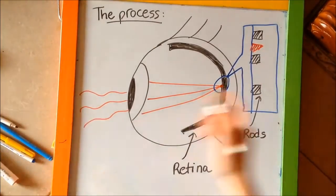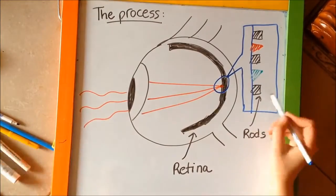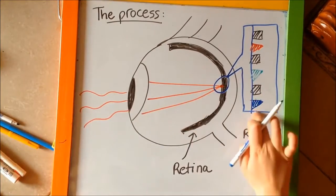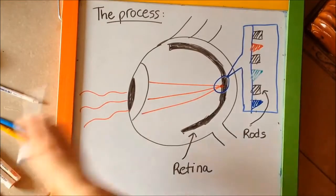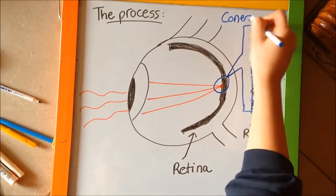There are three types of cones: cones for red light, cones for green light, and cones for blue light.